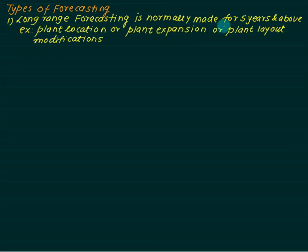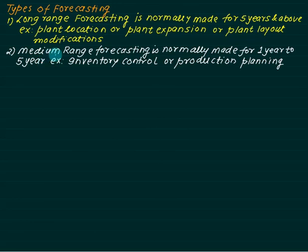Long-range forecasting is normally made for five years and above. Examples include plant location decisions to reduce transportation costs, plant expansion to bring in new machinery, and plant layout modifications to reduce inventory cost or production time. Medium-range forecasting is normally made for one to five years. An example is inventory control — reducing inventory in the plant so that overhead and holding charges decrease.